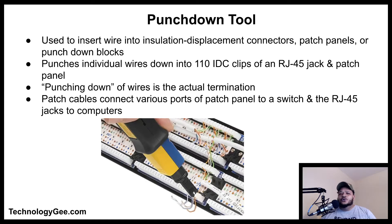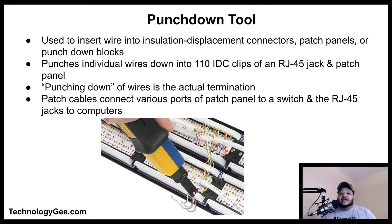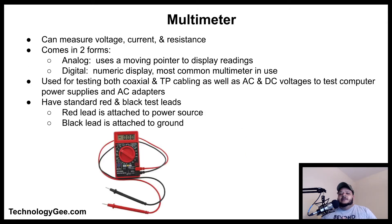The punch down tool is a small hand tool used by network technicians to insert wire into insulation displacement connectors, patch panels, or punch down blocks. A punch down tool punches individual wires down into the 110 IDC clips of an RJ45 jack and the patch panel. The punching down of the wires is the actual termination. The patch cables connect the various ports of the patch panel to a switch, and the RJ45 connects to the computers.